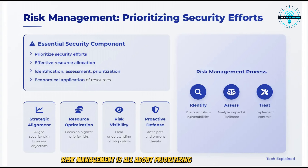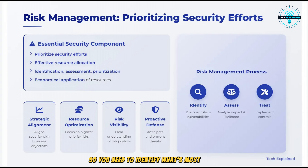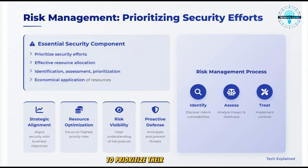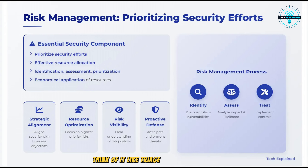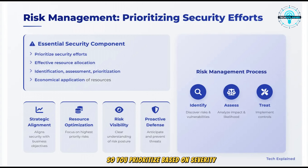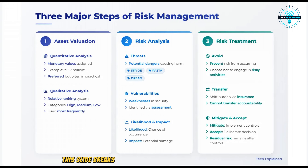Risk management is all about prioritizing your security efforts. You can't protect everything equally, so you need to identify what's most important and focus your resources there. Risk management enables organizations to prioritize their security efforts and allocate resources effectively — it's a systematic process of identifying, assessing, and prioritizing risks, then applying resources to minimize, monitor, and control them. Think of it like triage in an emergency room: you prioritize based on which risks pose the greatest threat to the organization.